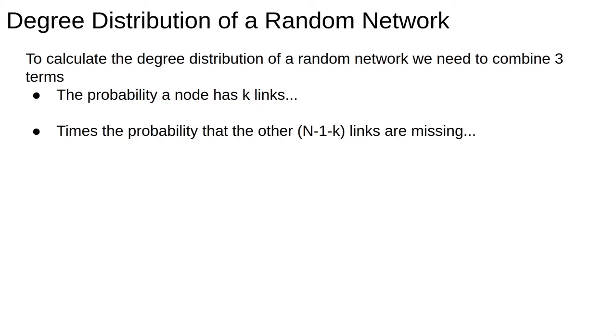The second is the probability that the other linkages were failures. Since each node can link to n-1 other nodes, this means that n-1-k nodes have failed to link. Lastly, we have to account for the fact that we can choose k links from n-1 possibilities.